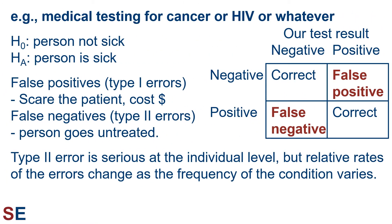Let's look at an example. Say we have a medical test for cancer or HIV or something else. The null hypothesis when doing such tests would be that the person is not sick, and the alternative would be that the person is sick. So in that scenario, the type 1 error is a false positive — the person gets a positive test result when in fact they don't have the condition — and the negative consequences include scaring the person and causing more follow-up tests, which then costs money.